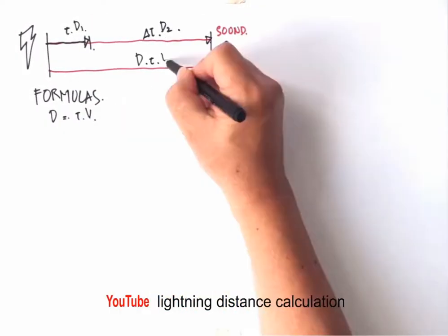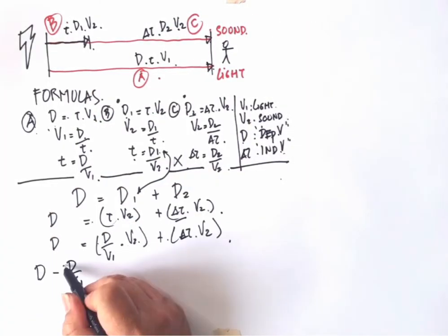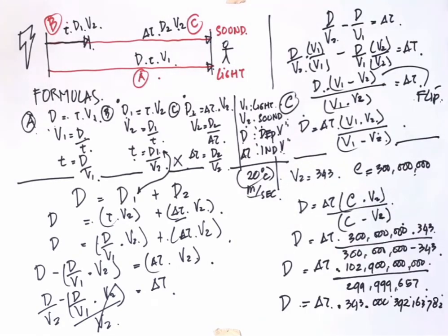In this video, we will calculate the distance between the lightning and us by knowing the interval time between the lightning flash and the thunder sound. But first, let's do some definition.